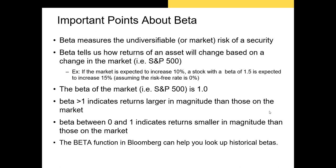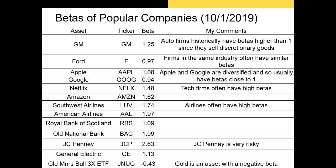Most stocks in the US will have betas between zero and about two. There are, however, stocks with betas well in excess of two, and you can actually have stocks with betas of less than zero — that indicates that when the expected return on the S&P 500 is positive, that stock is expected to have a negative return, and vice versa. One of the ways you can look up a company's beta and its historical beta is to use the beta function in Bloomberg, where you can look at the beta of any company through time.